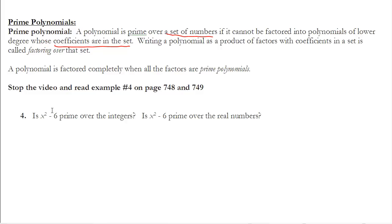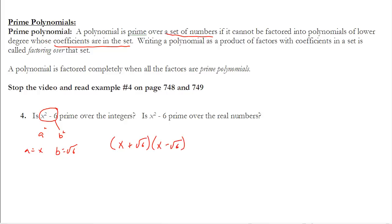Let's look at the final example: is x² − 6 prime over the integers, and is it prime over the real numbers? This follows the difference of squares pattern where a = x and b = √6. So factored form is (x + √6)(x − √6). Over the integers, it is NOT prime because √6 is not an integer — wait, actually it IS prime over the integers because we cannot factor it with integer coefficients. However, it is NOT prime over the real numbers, because √6 is a real number and the factored form has real coefficients.